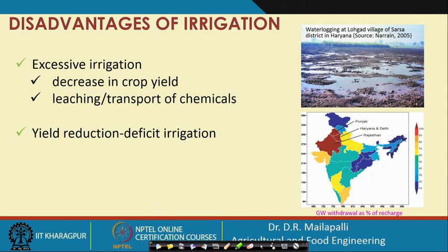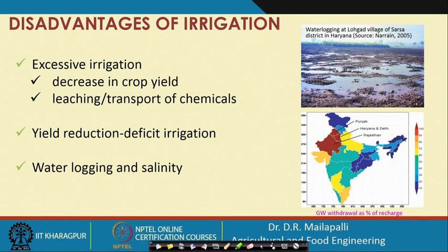Water logging and salinity are also problems caused by excessive irrigation, where water ponds on the surface preventing aeration of the soil. Looking at a map of India, states like Punjab, Haryana, Delhi, and Rajasthan withdraw groundwater in excess of recharge, which is an alarming situation as the water table keeps depleting deeper into the soil.